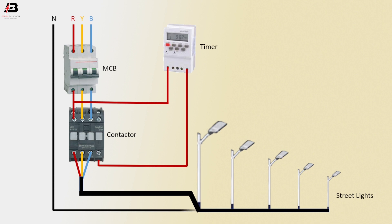Neutral connection connects to street light. Neutral connection connects to magnetic conductor. Neutral connection to timer. Now that circuit is ready for use.